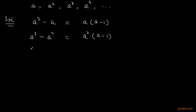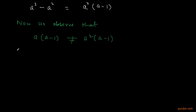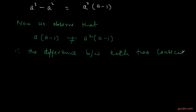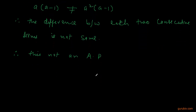We observe that a(a − 1) is not equal to a²(a − 1). Therefore, the difference between each two consecutive terms is not the same. Therefore, this is not an AP. So we cannot find out the common difference, and we need not find out three more terms of this sequence.